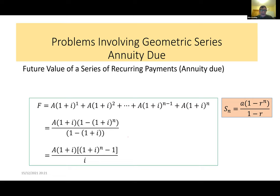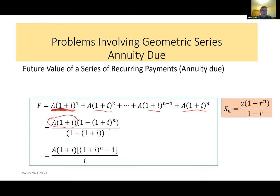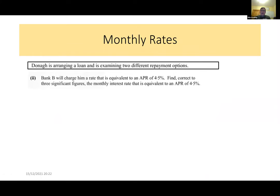For the annuity due, payments are made at the start of the month, so each payment earns interest. The derivation is similar: substituting into the Sn formula with first term A times (1 plus i) and ratio (1 plus i), giving a slightly different result. These two derivations are a good lead-in before tackling the amortization formula.